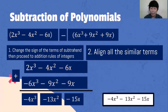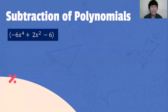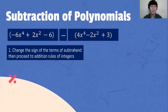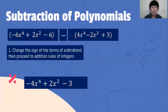I hope you were able to follow our processes. There are only two. Next example: negative 6x raised to 4 plus 2x squared minus 6, minus the quantity of 4x raised to 4 minus 2x squared plus 3. The first process: change the sign of the terms of the subtrahend, then proceed to addition rules of integers. So this one is the subtrahend.